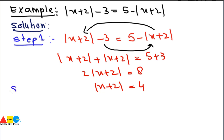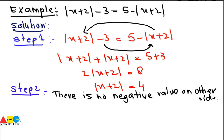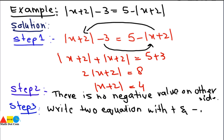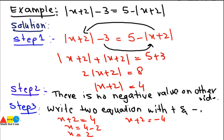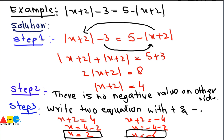Step 2: check whether there is any negative number on the other side — there is none. Step 3: write two equivalent equations: x + 2 = 4 and x + 2 = −4. Solving: x = 4 − 2 = 2, and x = −4 − 2 = −6. We get two solutions: x = 2 and x = −6.